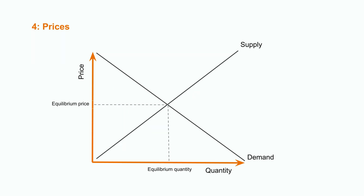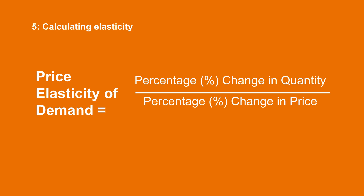Where the supply curve and demand curve meet, here are the equilibrium price and the equilibrium quantity. This is the quantity that will be produced and sold, and the price at which it will be sold. The elasticity can be calculated: it is equal to the change in one variable divided by the change in the other variable.